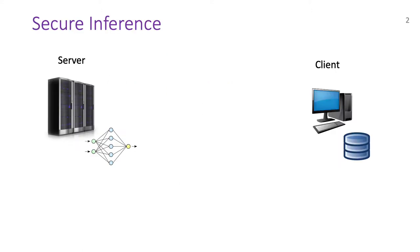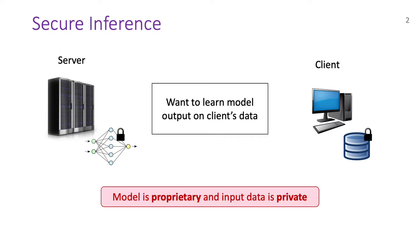Consider we have two parties, a server with a machine learning model and a client with some input data. The parties want to perform inference, that is, they want to learn the output of the model on the input data. This should be straightforward, however, the model and the data they are dealing with is sensitive and thus cannot be disclosed. This leads us to the problem of secure inference, which seeks to answer how these parties can perform inference without revealing anything about their sensitive inputs.